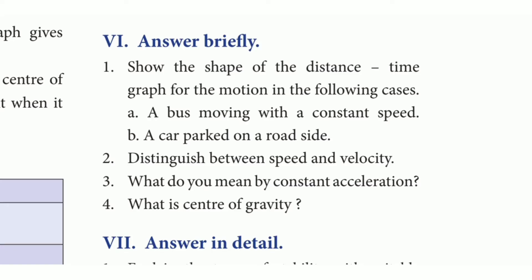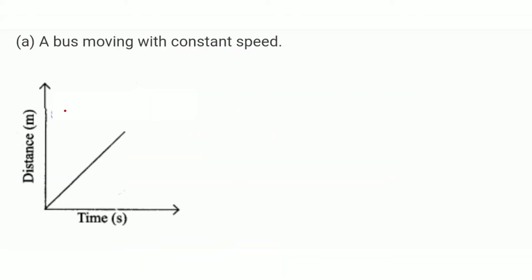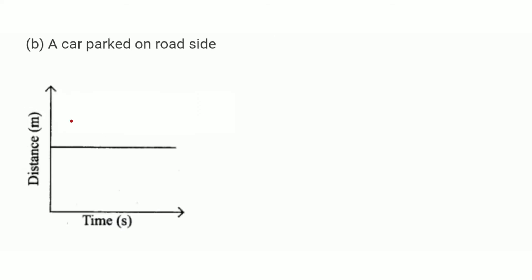Believe section, first question: Show the shape of the distance-time graph for the following cases. A: A bus moving with a constant speed. B: A car parked on a road. The answer diagrams are shown — A answer diagram and B answer diagram are referenced in the video.